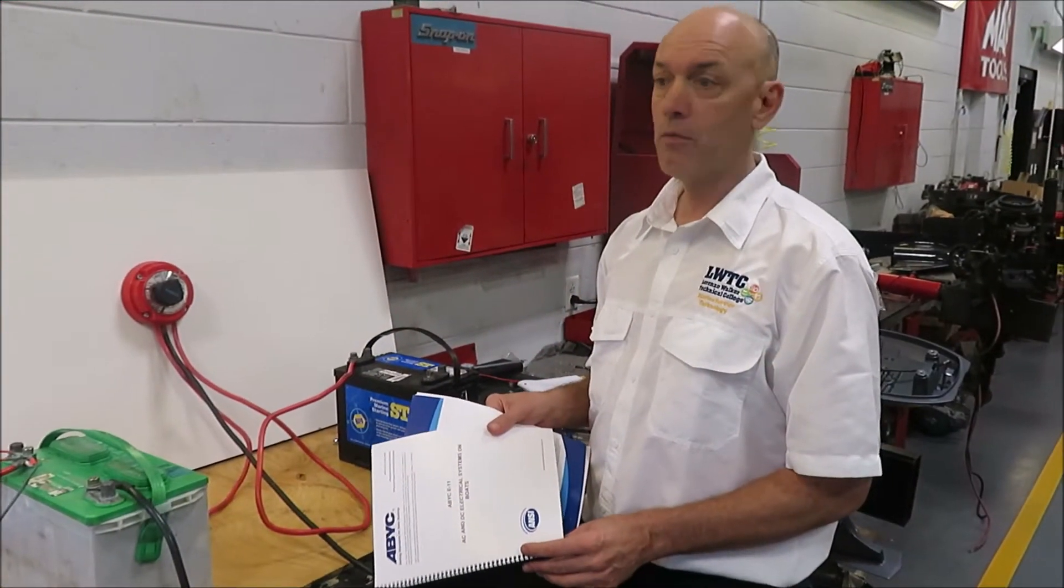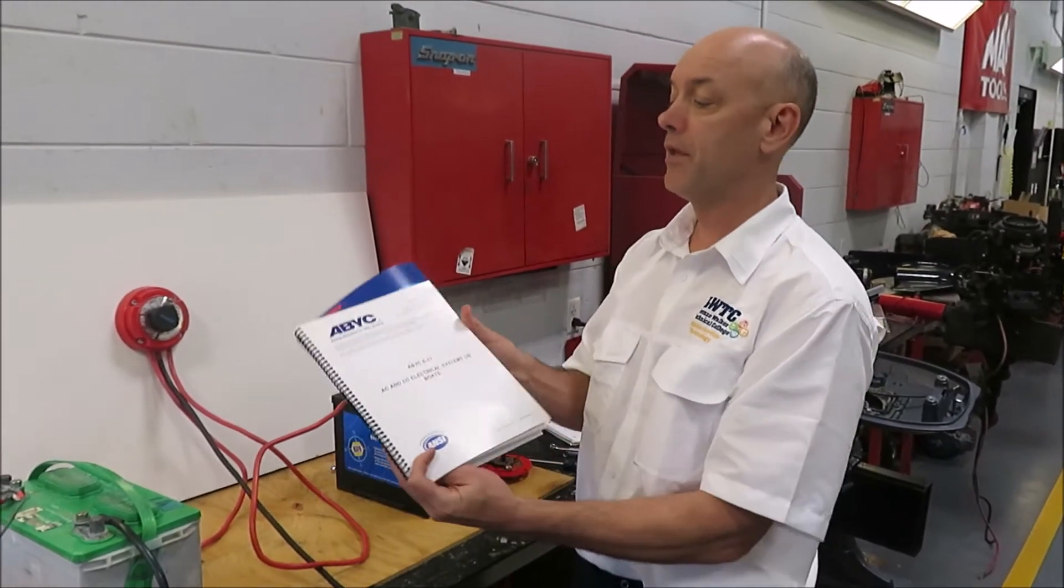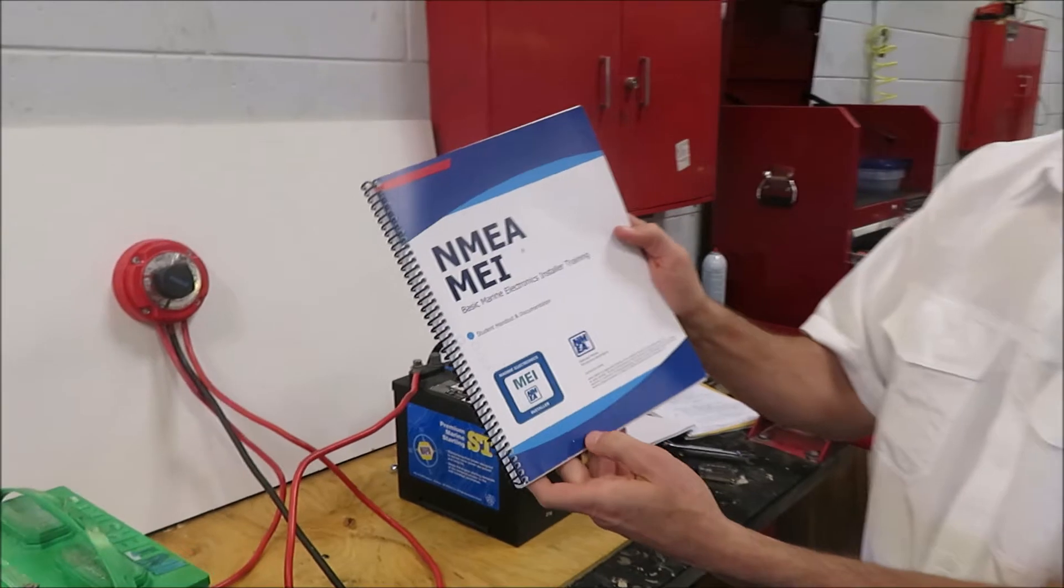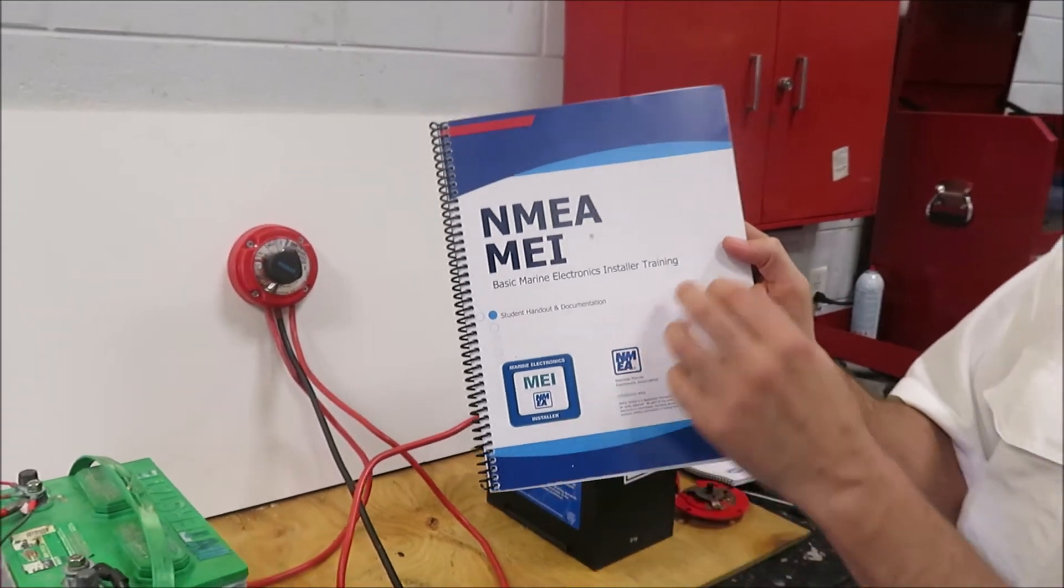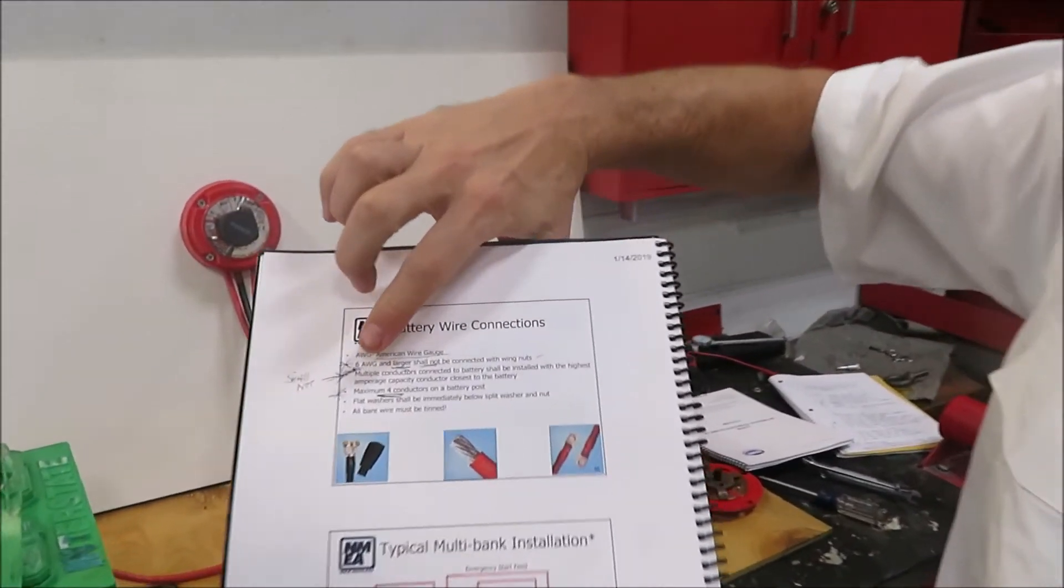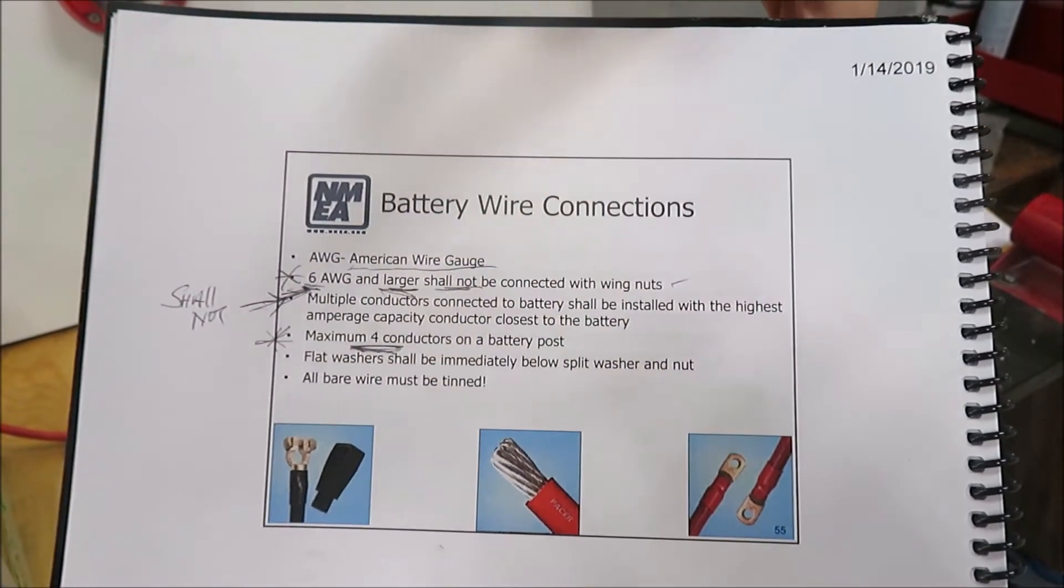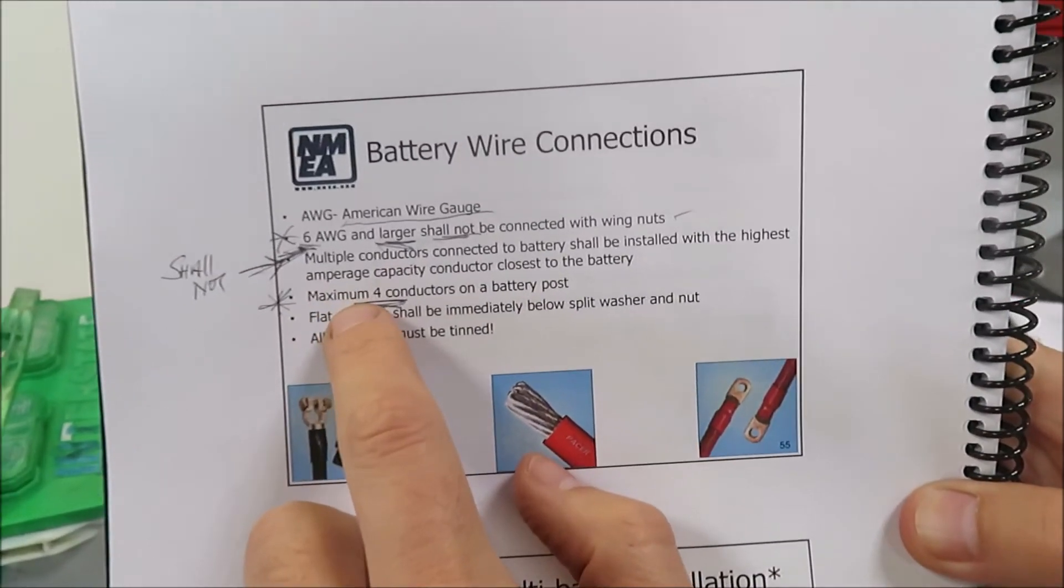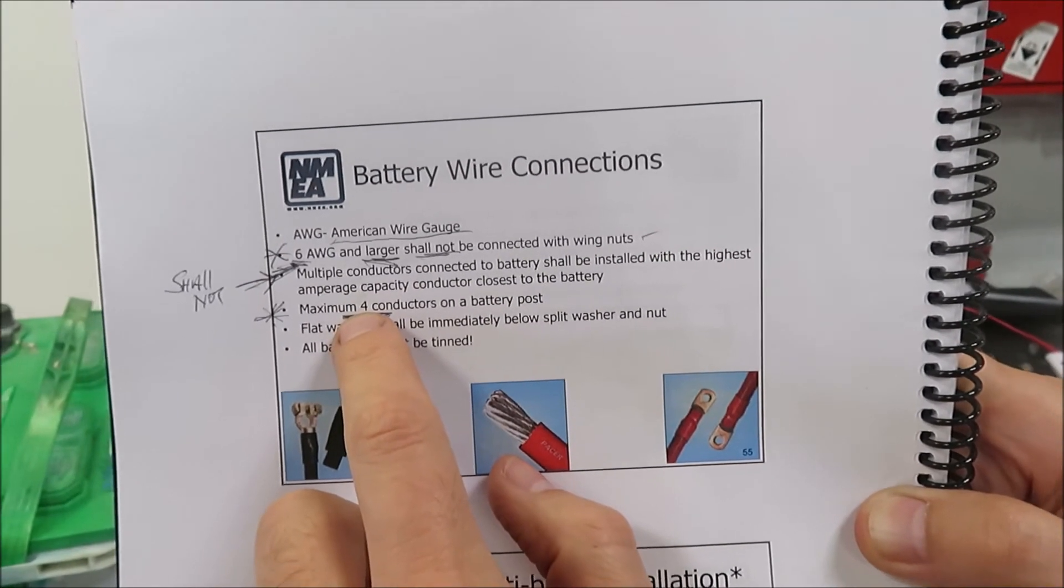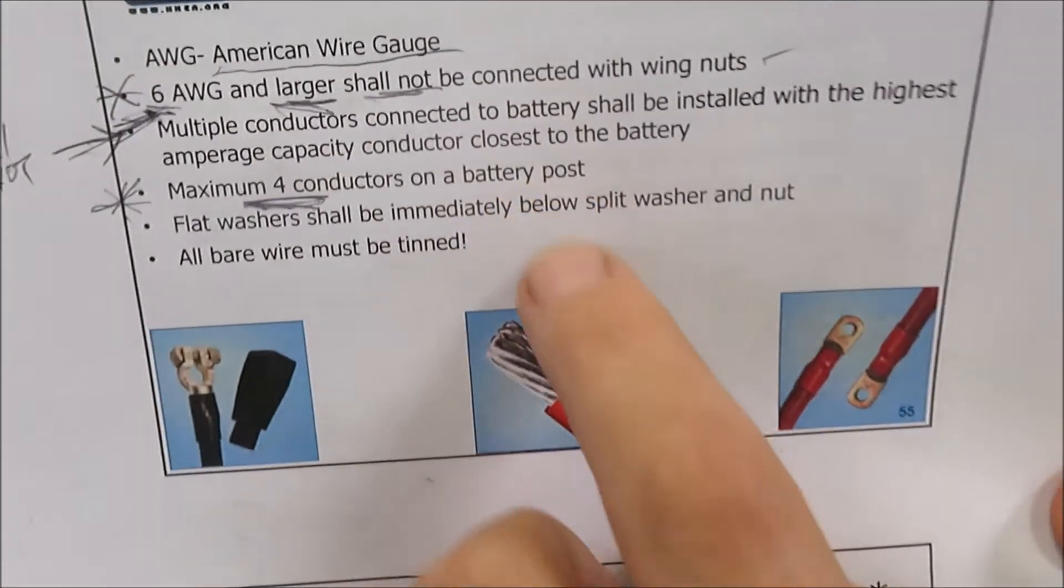Two of the standards for making connections and rigging boats are going to be the American Boat and Yacht Council, and NEMA, which is the National Marine Electronics Association. And that's what we're using as the basis for these. So with your battery wire connectors, you'll see that a flat washer shall be immediately below a split washer and the nut. Another thing to keep in mind is that when you are connecting, especially on the house battery where you're connecting multiple wires or cables to the battery post, you only want to have a maximum of four on the post itself.